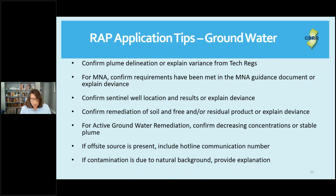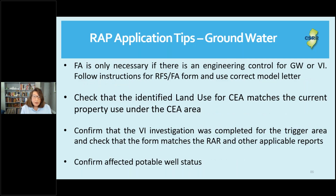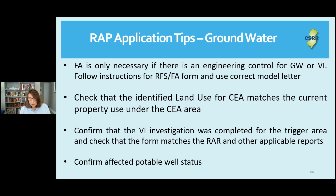Financial assurance for groundwater is only necessary if there is an engineering control for groundwater or VI — follow the instructions for the form and again use the correct model letter. Check that the identified land use for the CEA matches the current property use under the CEA area. Confirm that the VI investigation was completed for the trigger area and check that the form information matches the RAR and other applicable reports. Confirm that you've addressed the potable well issue for the site. Keep in mind that the permit reviewer does not know the history of the site — the easier you make it to find the information, the quicker the review can be completed and the permit issued.